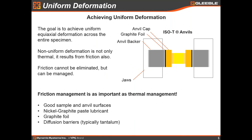Another thing people are looking for in uniaxial compression is friction management. The end goal is usually to achieve a uniform deformation. To get uniform deformation, you need not only uniform temperature but also limited friction at the interfaces. As you compress the sample, it's going to swell into a larger diameter and friction at those interfaces controls how much barreling you get. To get very good data with minimal barreling — meaning uniform strain and stress throughout the sample — you want to eliminate that friction. We've developed over many years and many thousands of experiments some good high-temperature lubrication abilities, including nickel graphite paste lubricant, graphite foils, and diffusion barriers — typically tantalum — that prevent the sample from sticking and making a diffusion bond with the anvil cap, which increases friction and accelerates wear on the anvil caps.